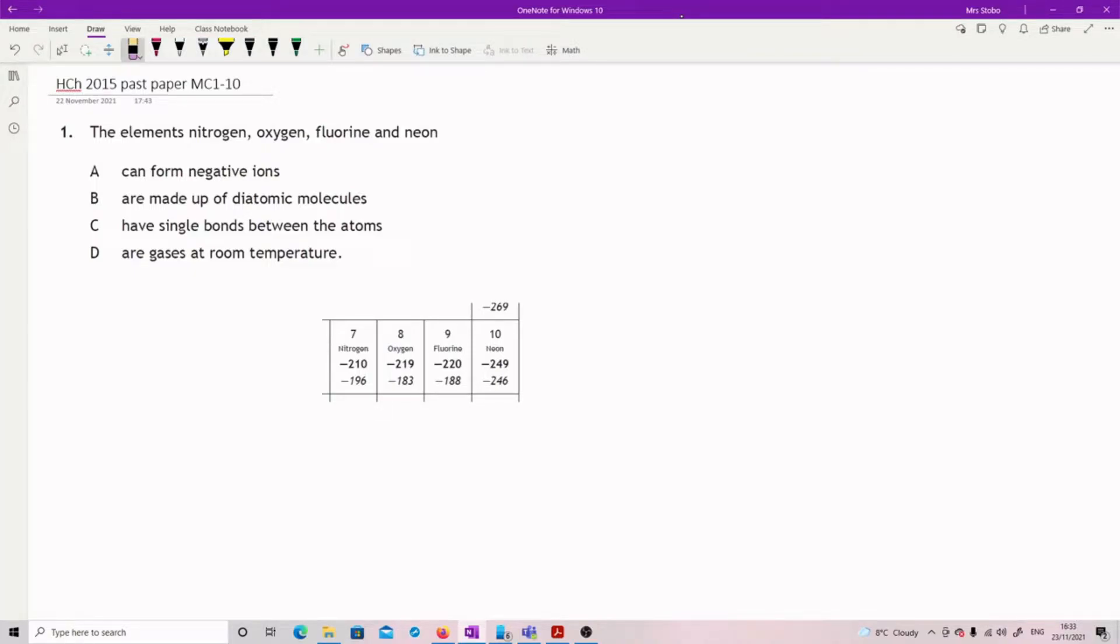Okay, question one. The elements nitrogen, oxygen, fluorine and neon. Let's start with: they can form negative ions, right? Well, I've pulled just this little bit of the periodic table. This is group five, six, seven and eight or zero.